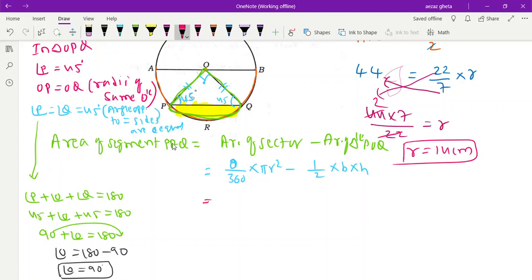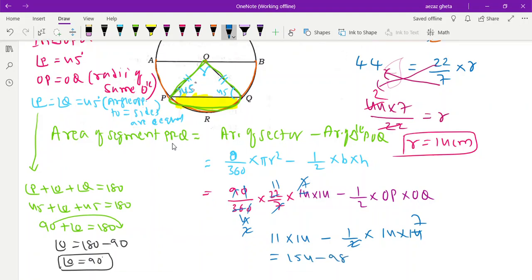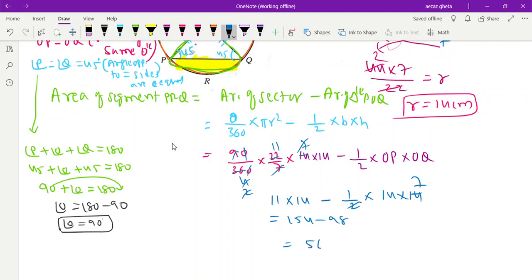So theta is 90 divided by 360 into 22 divided by 7, radius is 14 into 14, minus half base is OP and height is OQ. That's 11 into 14 minus OP is 14 and OQ also 14, so 154 minus 98. We get the answer is 56 cm².